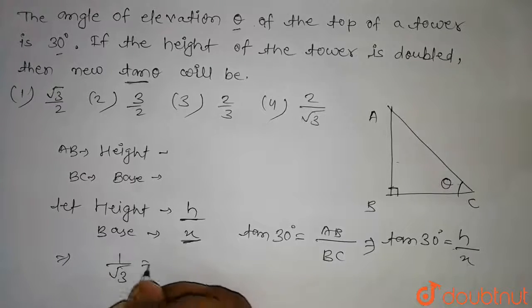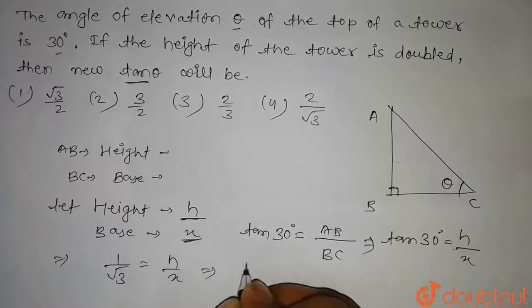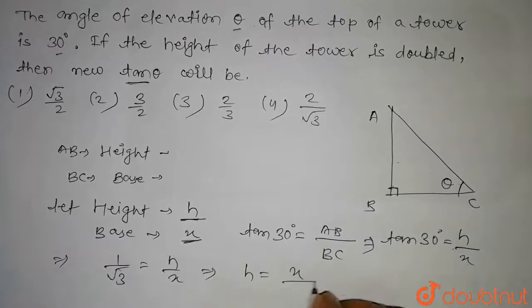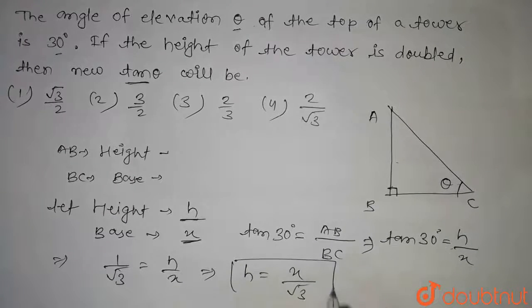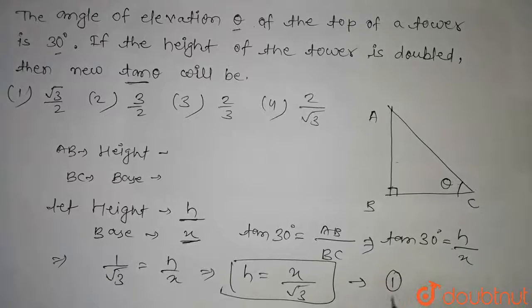And we can write tan 30 degrees equal to 1 by root 3, and this is h by x. So from here we get h equal to x divided by root 3. Let us consider this as equation number 1.